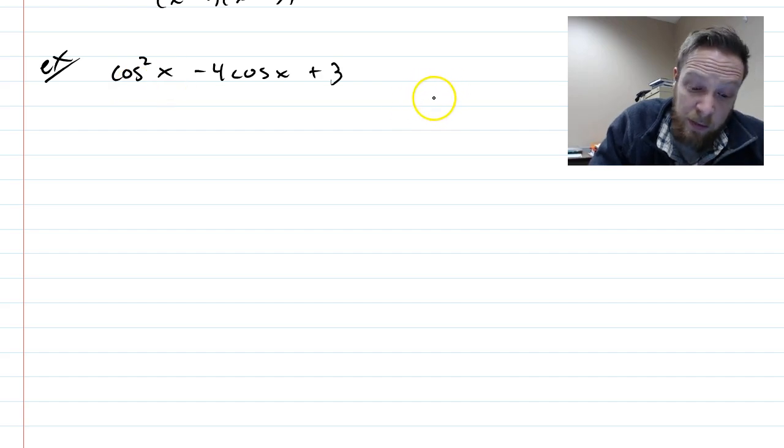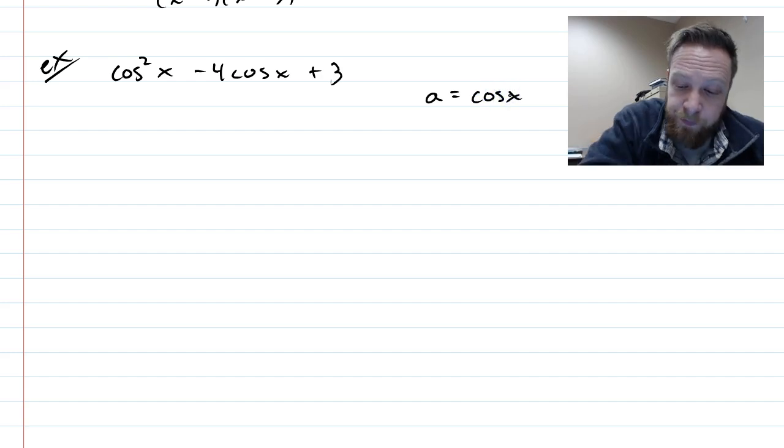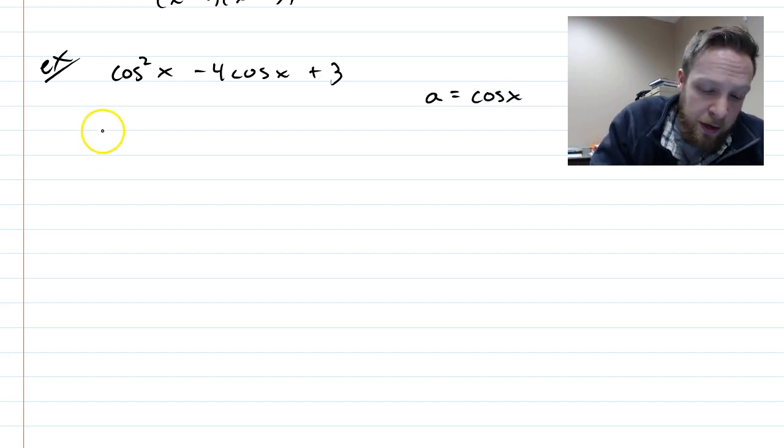So what we're going to say is we're just going to let, and it doesn't matter what variable we use, let's let a be cosine x. So we can rewrite this now as a squared minus 4a plus 3.